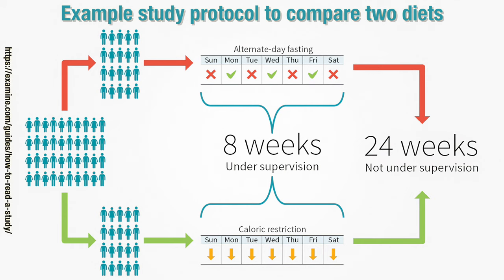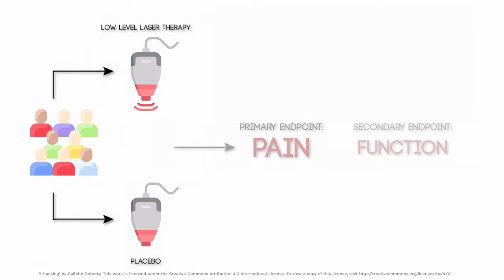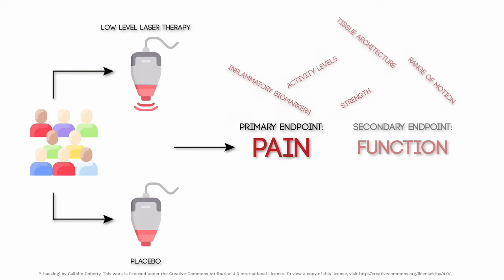The methods section will also describe the intricacies of the design, because there are lots of ways that an RCT, a case-control study, or a cohort study can be run. For instance, the methods will provide information about the length of the study, the treatment regimen, the testing methods, and the outcome measures or endpoints that were evaluated. To give an example, a study on the effects of a low-level laser therapy regime could use pain as its primary endpoint and function as a secondary endpoint. One trick researchers use to find an effect — because studies that show an effect are more likely to get published — is to collect many endpoints, then make the paper about the endpoints that showed an effect, either by downplaying or not mentioning the others.